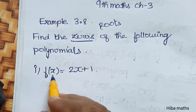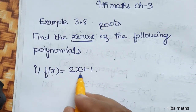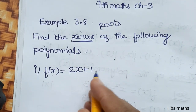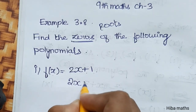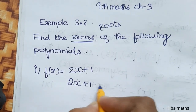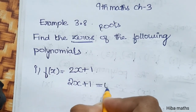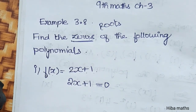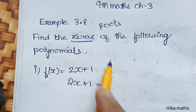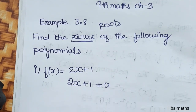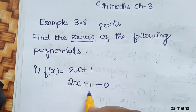The first question is f(x) = 2x + 1. So the polynomial is equal to 0. Zeros are equal to 0, roots are equal to 0.